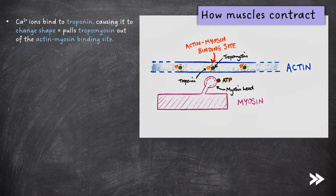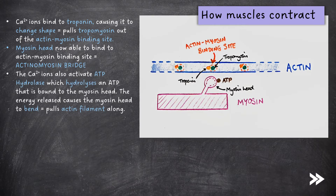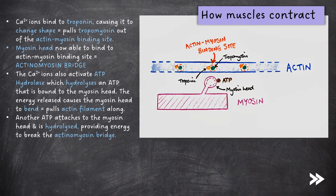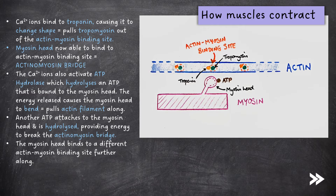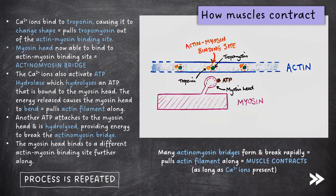The myosin head is now able to bind to the actin myosin binding site, forming an actinomyosin bridge. Calcium ions also activate ATP hydrolase, which hydrolyses an ATP that is bound to the myosin head. The energy released causes the myosin head to bend, pulling the actin filament. Another ATP attaches to the myosin head and is hydrolysed, providing energy to break the actinomyosin bridge. The myosin head then binds to a different actin myosin binding site further along, and this process is repeated. Many actinomyosin bridges form and break rapidly, pulling the actin filament along. The muscle contracts and continues to contract as long as calcium ions are present.